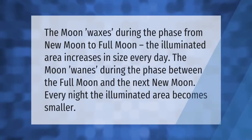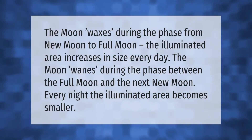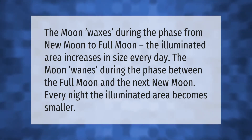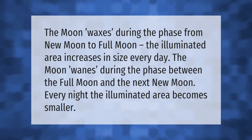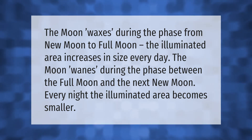The moon waxes during the phase from new moon to full moon — the illuminated area increases in size every day. The moon wanes during the phase between the full moon and the next new moon; every night the illuminated area becomes smaller.